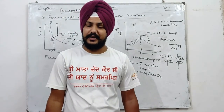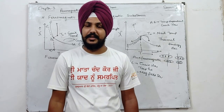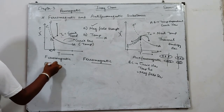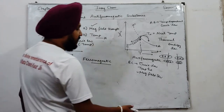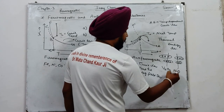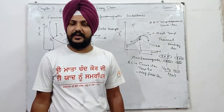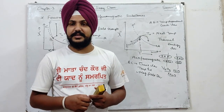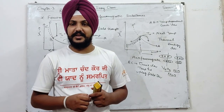यह था anti-ferromagnetic substances का magnetic susceptibility curve explanation। Example के तौर पर: कुछ pure transition metals ferromagnetic character show करते हैं। Oxides जैसे V₂O₃, nickel oxide, manganese oxide — ये substances anti-ferromagnetic substances हैं। यह था हमारा ferromagnetic और anti-ferromagnetic substances का explanation। बाकी हम next lecture में discuss करेंगे। Thank you.